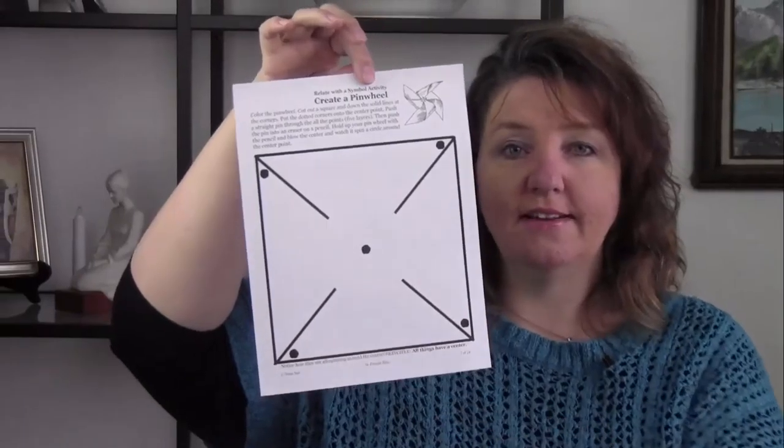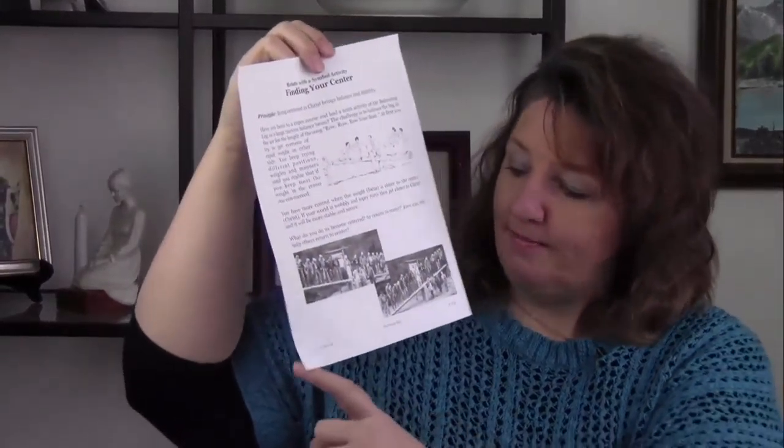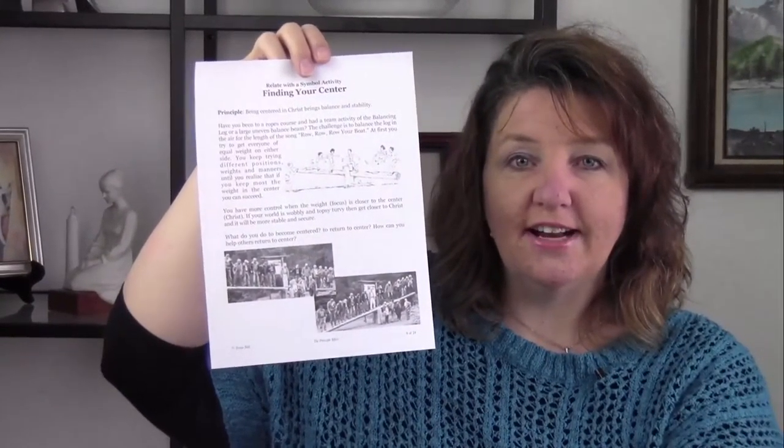Week three, you get a 'Relate with a Symbol' activity — a pinwheel. The pattern is already there for you; you just cut it out, create the pinwheel, and talk about it: How does the pinwheel go around? What is the centerpiece? Why does everything need a center? Another part of the activity for older children is getting on a teeter-totter or thinking about one. There are pictures of men balancing on a large uneven teeter-totter, and you discuss where the safest place on an uneven teeter-totter would be.